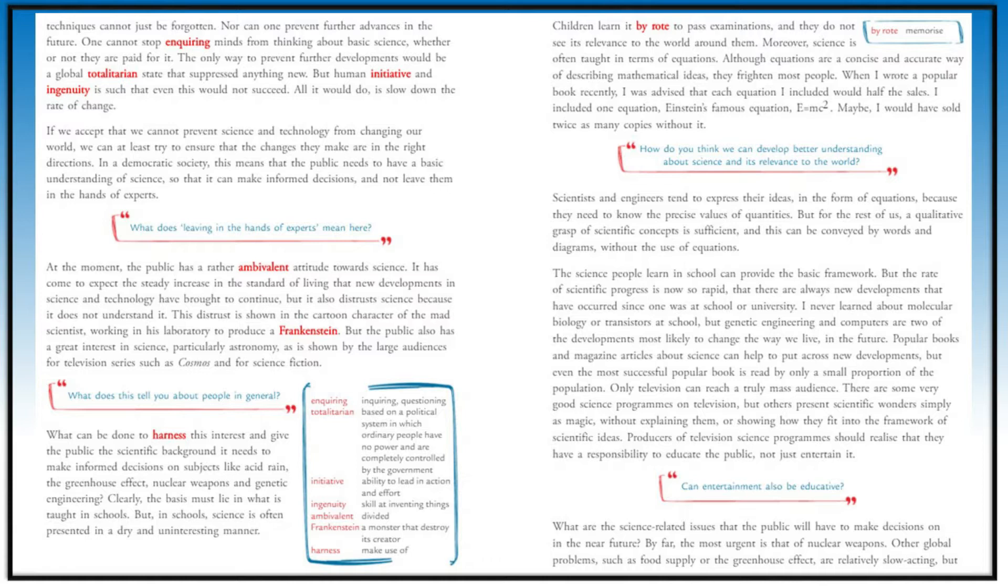People have contrasting attitudes about science. They want continuous development but also don't trust science. The distrust is like a character of a mad scientist working in his lab to produce a monster that destroys its creator. People think that whatever things are developing will destroy people, but people also have interest in science and astronomy.